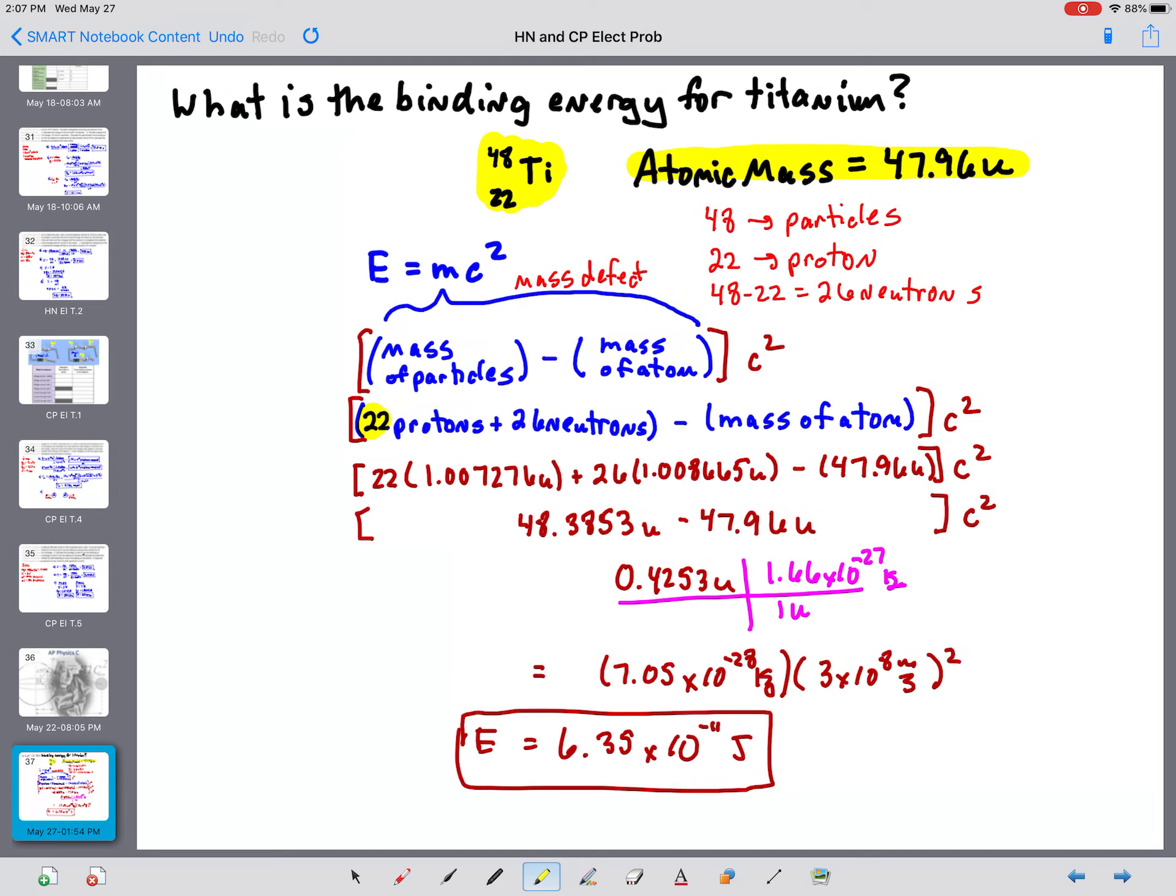we're going to take the mass of 22 protons and the mass of 26 neutrons from the table we used on all the worksheets. And I would give you these values. Right there, that's the mass of a proton. And right here, that's the mass of a neutron.